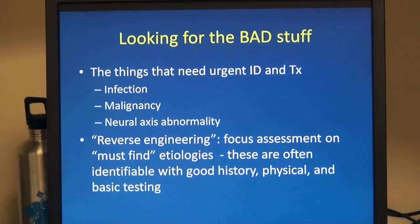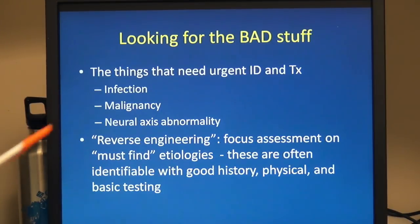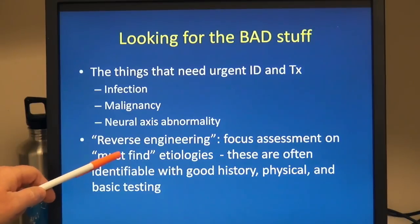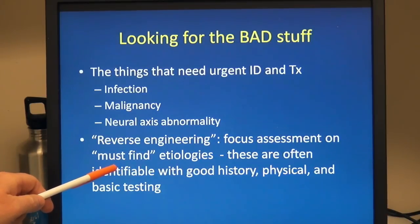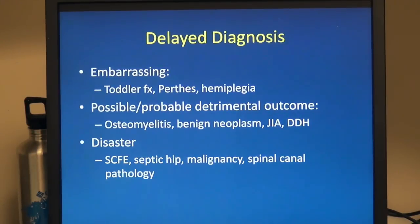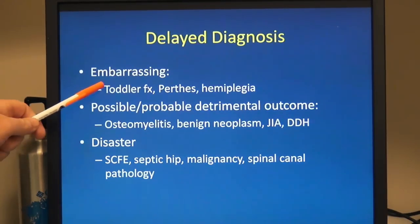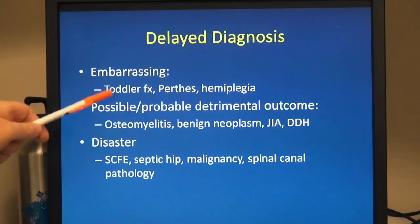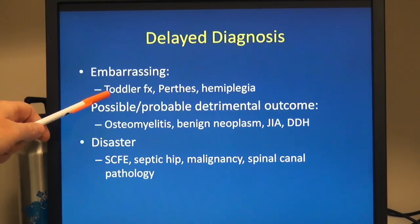The things that need urgent identification and treatment are infection, malignancies, or neural axis abnormalities. I find it helpful to approach this in a reverse-engineering manner, where the focus is on finding these must-find etiologies first, and then taking a bit more time for others. Missing a diagnosis at first onset is often not the worst thing, but it's embarrassing to miss a toddler fracture, a first Perthes presentation, or a subtle hemiplegia — though it probably won't cause long-term detriment.